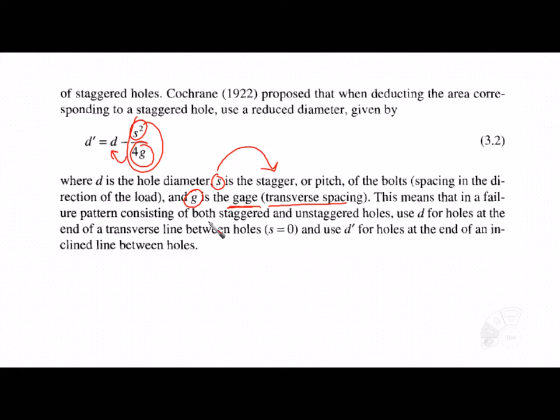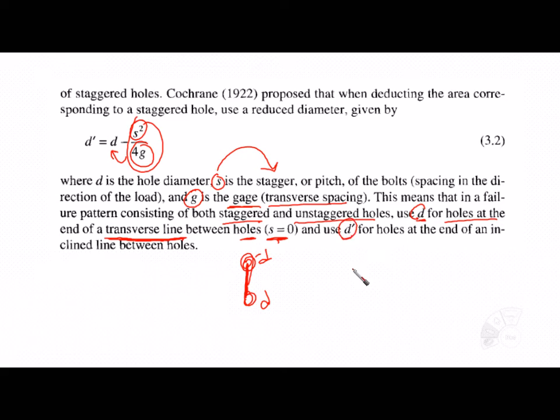In a failure pattern consisting of both staggered and unstaggered holes, use d for holes at the end of a transverse line (where s = 0), and use the reduced d' for holes at the end of an inclined line between holes.